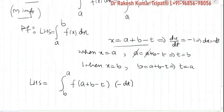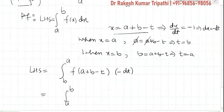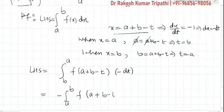As we know, an important property of the definite integral is that whenever we interchange the limits, a negative sign appears before the integral. So we interchange the limits from b–to–a to a–to–b, giving minus times integral from a to b of f(a + b − t) times (−dt). The two negative signs cancel each other.